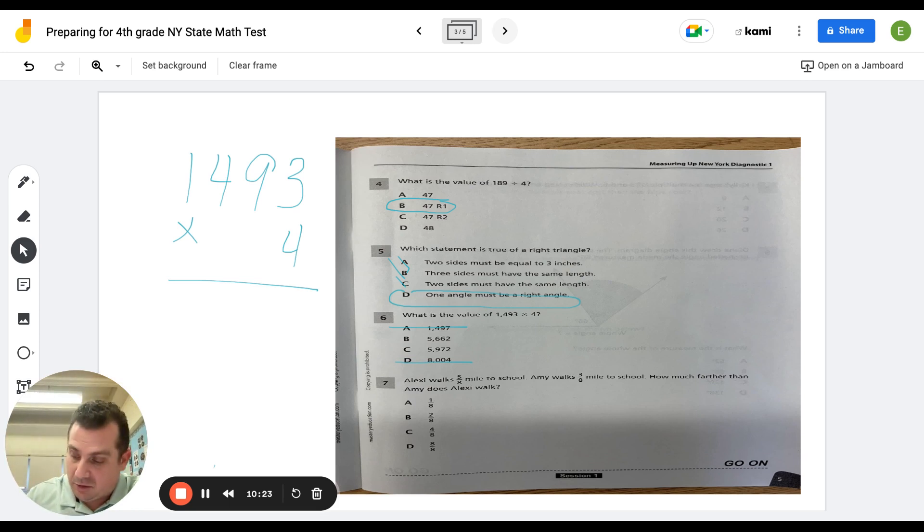Four times three is 12. Now four times nine is 36 plus one is 37. Right there is enough to tell you that your answer is C, but we'll keep going. Four times four is 16. Oh, wait. I lost my place. Four times three is 12. Good. Four times nine is 36 plus one is 37. Four times four is 16 plus three is 19. And four times one is four plus one is five. 5,972. Good.